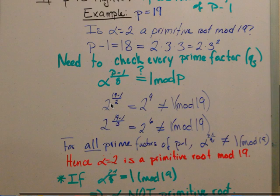First we check for q equals 2, our first prime factor. We calculate 2 to the power of (19 minus 1) over 2, which equals 2 to the 9. This is not congruent to 1 mod 19.